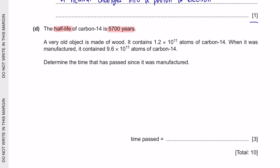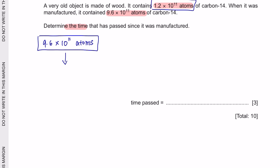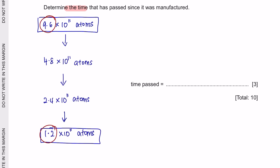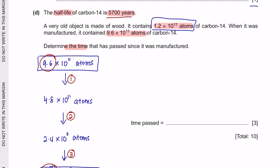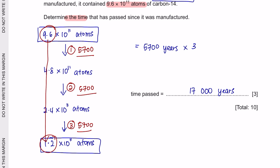Question part D: The half-life of carbon-14 is 5,700 years. A very old object is made of wood. It contains 1.2 × 10¹¹ atoms of carbon-14. When it was manufactured, it contained 9.6 × 10¹¹. Determine the time that has passed since it was manufactured. From 9.6 × 10¹¹ to become 1.2 × 10¹¹, it has decayed by half once, twice and 3 times. Each half-life takes 5,700 years, so the total time is 5,700 multiplied by 3, giving 17,100 years.